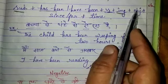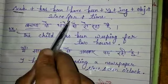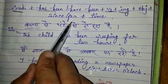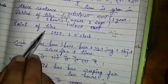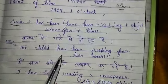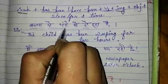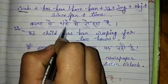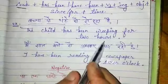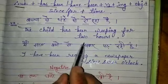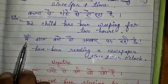Then add the object — there is no object here. Then 'since' or 'for'. I had told you yesterday that we use 'for' for a period of time and 'since' for a point of time. Here, 'dho ghante se' — two hours is a period of time, time is not fixed, so we use 'for'. The sentence is: The child has been weeping for two hours.